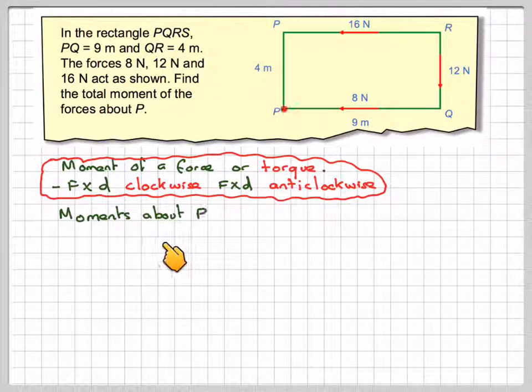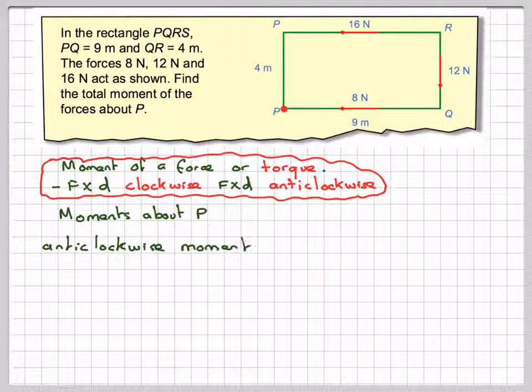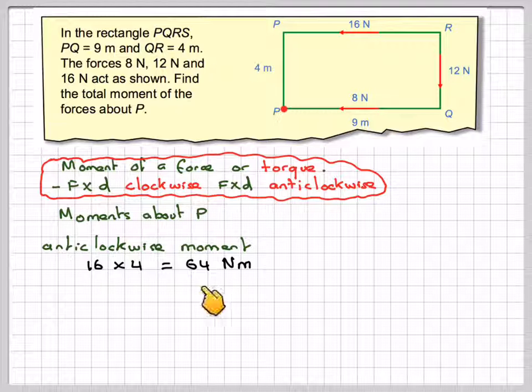Let's just have a look at this. The moment about P, so we're going to take this point P. What is the moment about P? Let's take the anticlockwise moment. This will be this one here because it's going to move the force, move it around this way. So the distance is going to be 4 times 16, or 16 times 4, which gives me 64, and the units are newton meters.